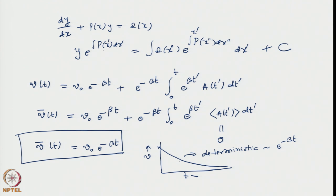What this means is: the particle starting with some velocity V_0 will necessarily see its velocity come to 0. This is a kind of deterministic decay of velocity — a deterministic result from Stokes' law, essentially an exponential function. The time scale — the characteristic time, which we call tau_r for relaxation — for the particle will be 1/beta. If you throw a particle into a fluid with some velocity V_0, its average velocity will come to 0, and the time required for an exponential decay of about 70 percent will be 1/beta or tau_r.